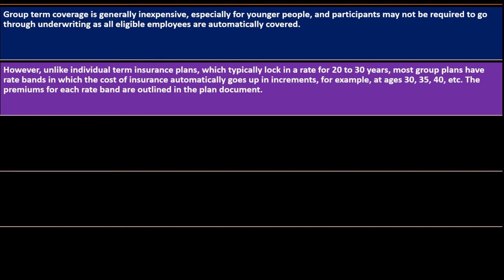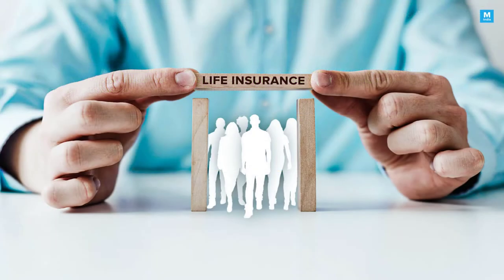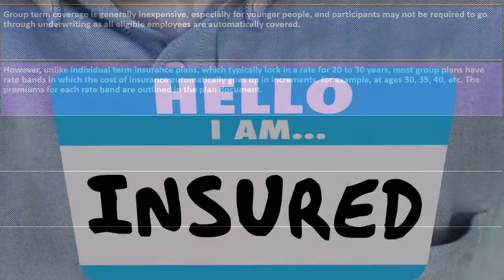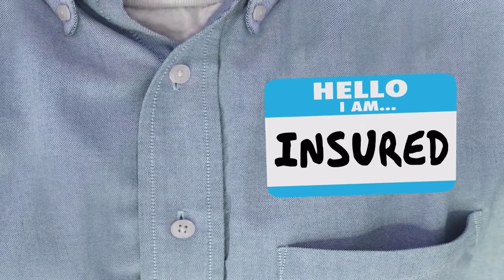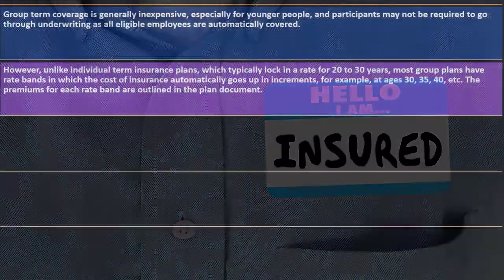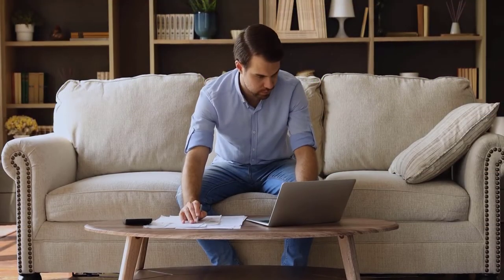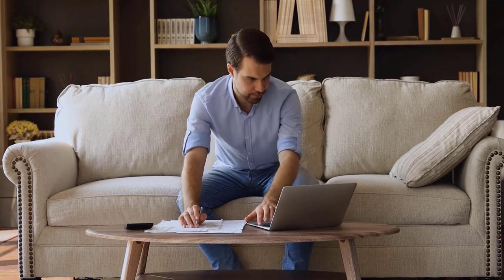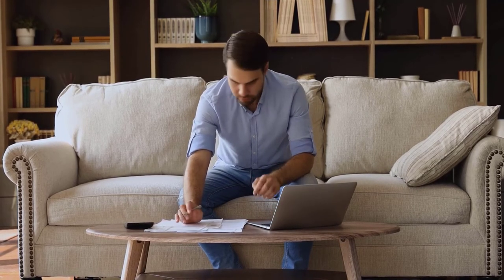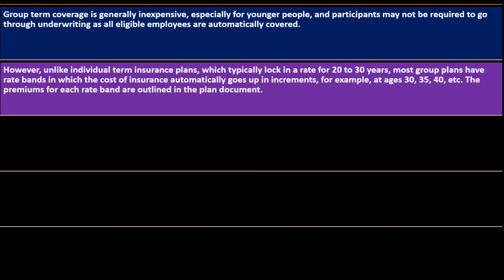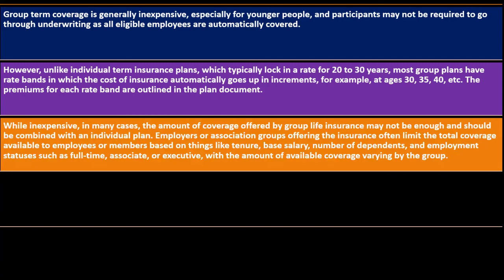However, unlike individual term insurance plans which typically lock in a rate for 20 to 30 years, most group plans have rate bands in which the cost of insurance automatically goes up in increments — for example, at ages 30, 35, 40, et cetera. When you buy individual term life insurance, premiums are locked in for the full term, but on the group side, adjustments happen at set age increments. The premiums for each rate band are outlined in the plan document.